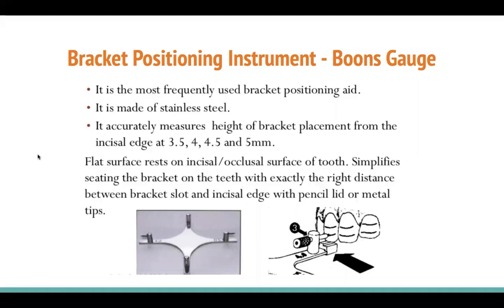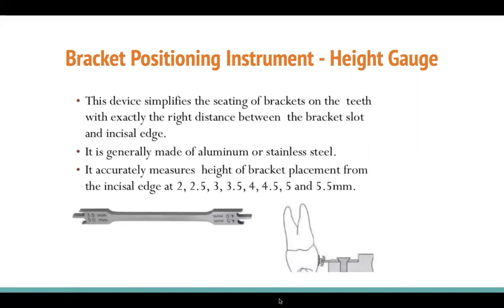The flat surface of the bracket positioning instrument rests on the incisor or occlusal surface of the tooth, simplifying bracket seating with exactly the right distance between the bracket slot and incisor edge. The rod-type device works the same way — use whichever edge corresponds to your desired measurement: 3.5mm, 4mm, 4.5mm, or 5mm from the incisor edge. It is generally made of aluminum or stainless steel and accurately measures the bracket placement height.